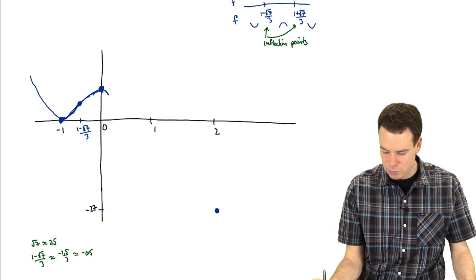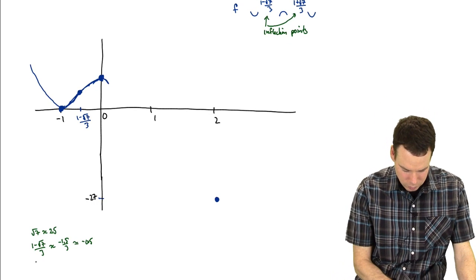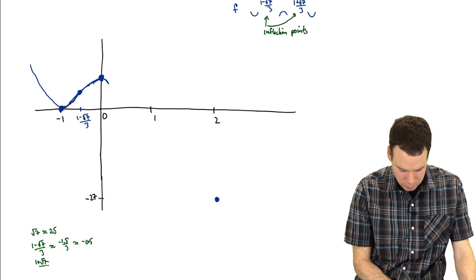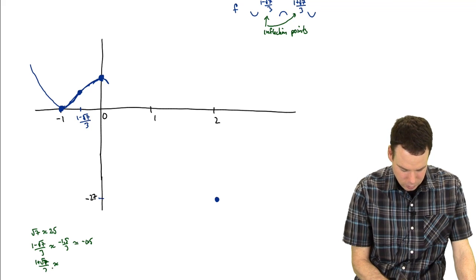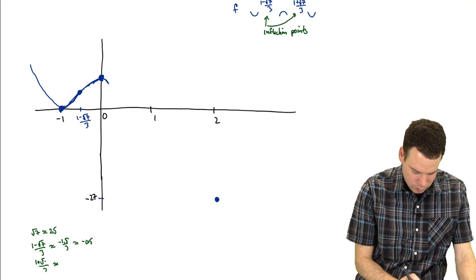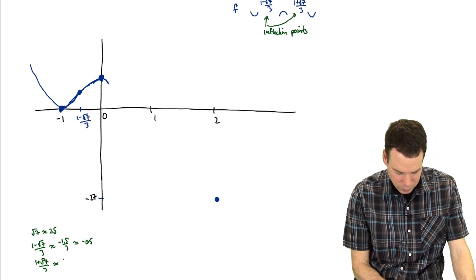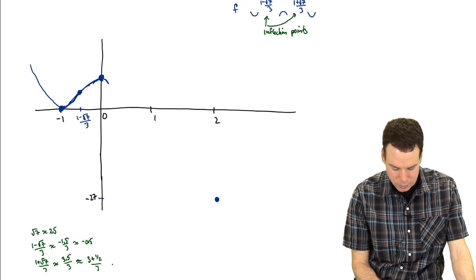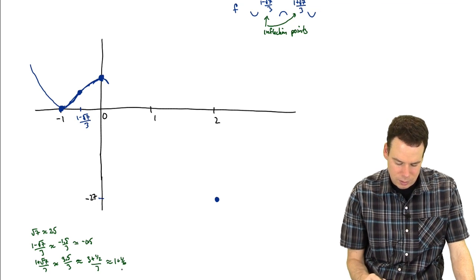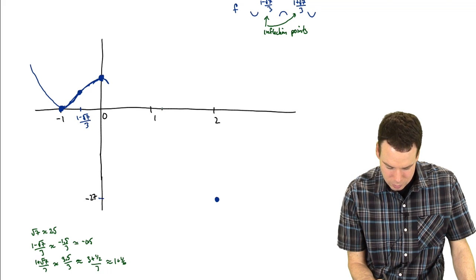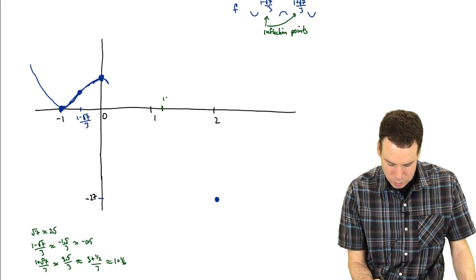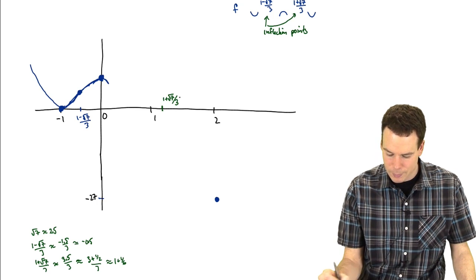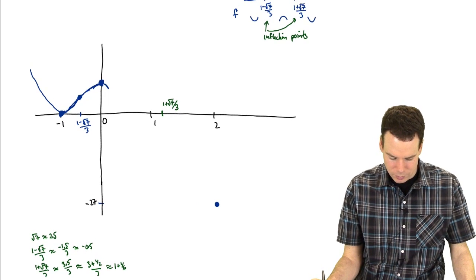What about (1+√7)/3? That's roughly (1+2.5)/3 = 3.5/3, like (3+0.5)/3, which is 1+1/6. So this is approximately 1+1/6, somewhere around here. There's the x-coordinate of my other inflection point.